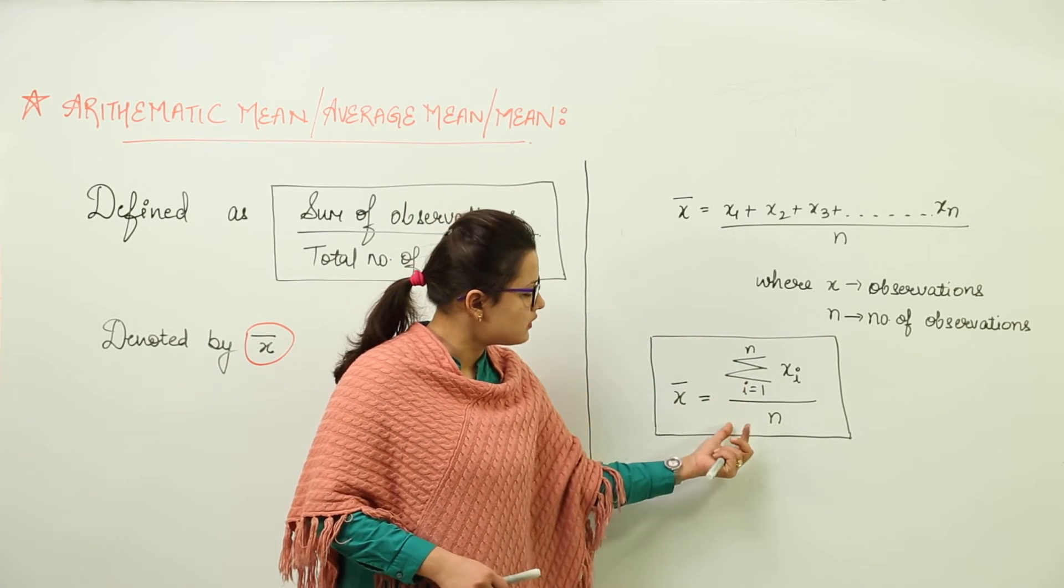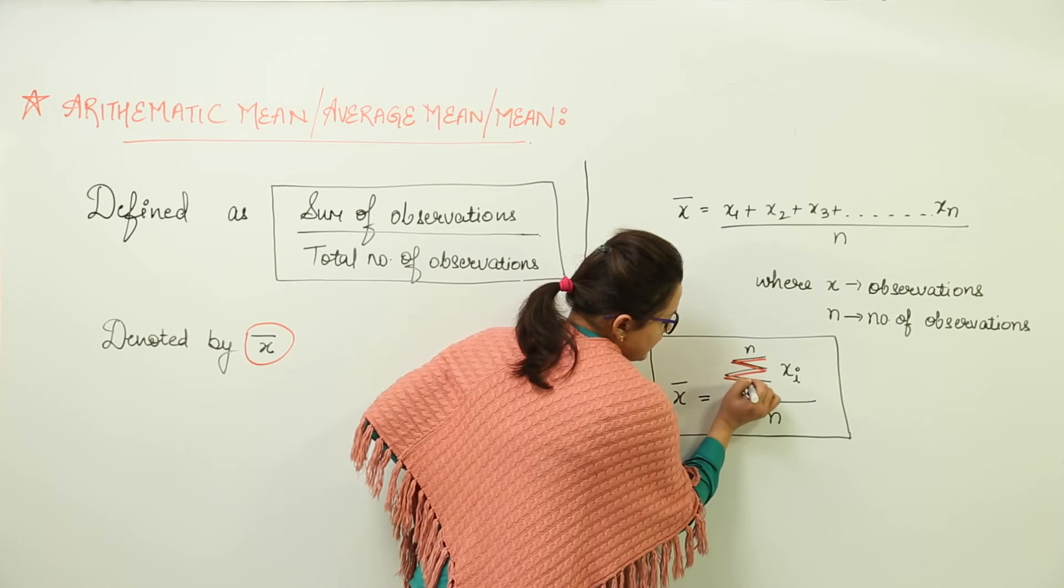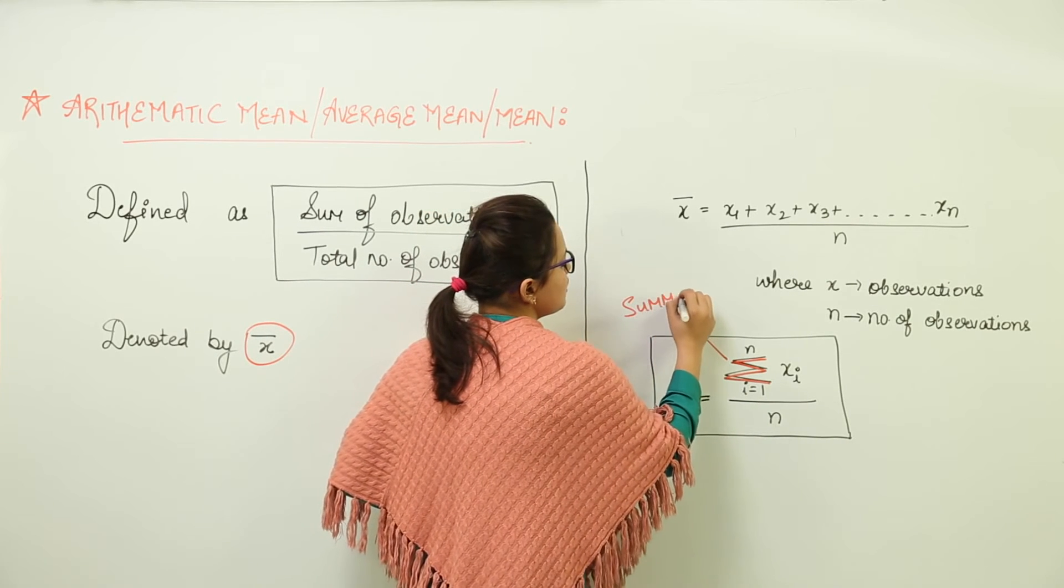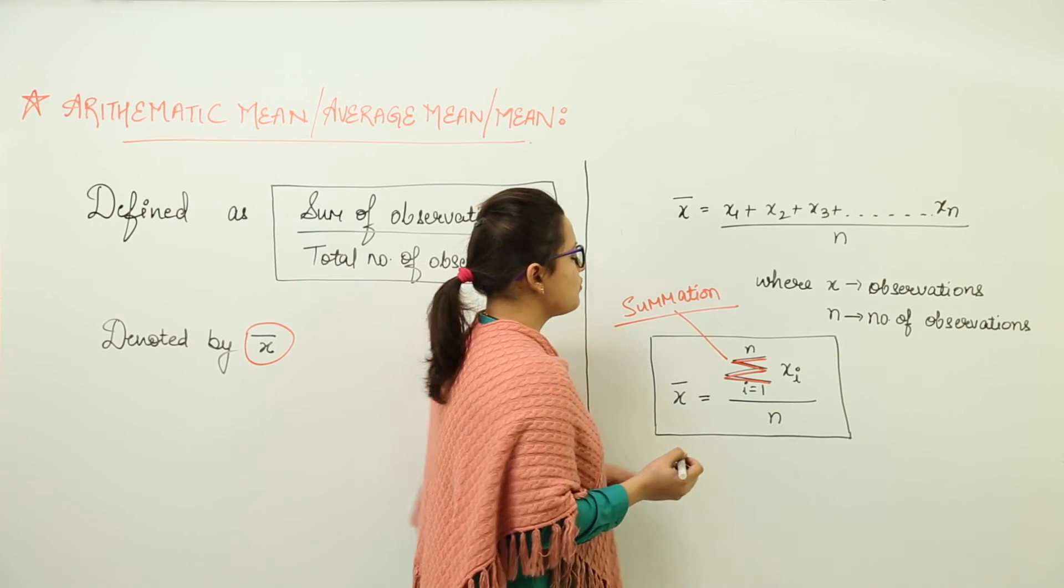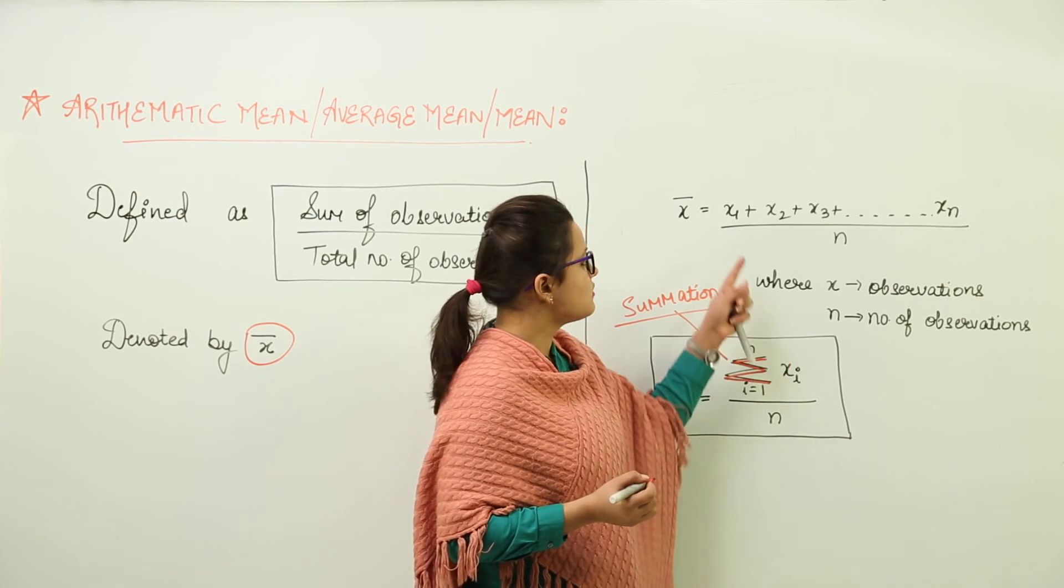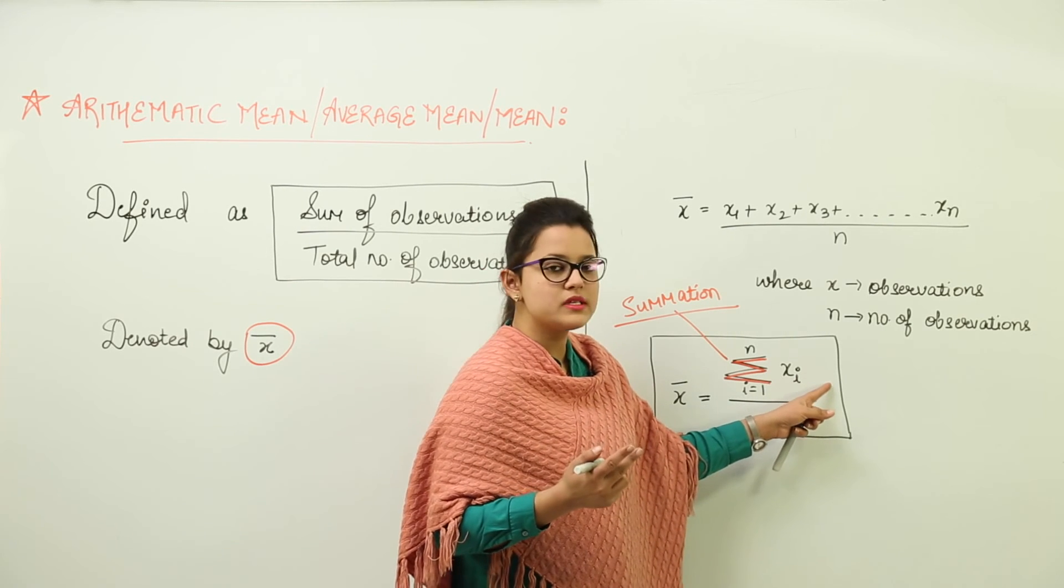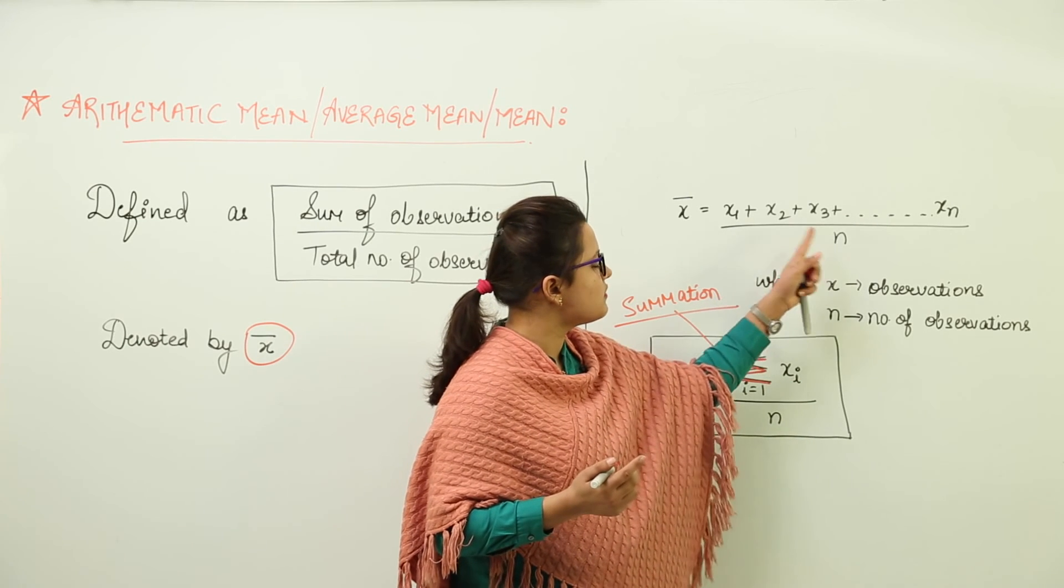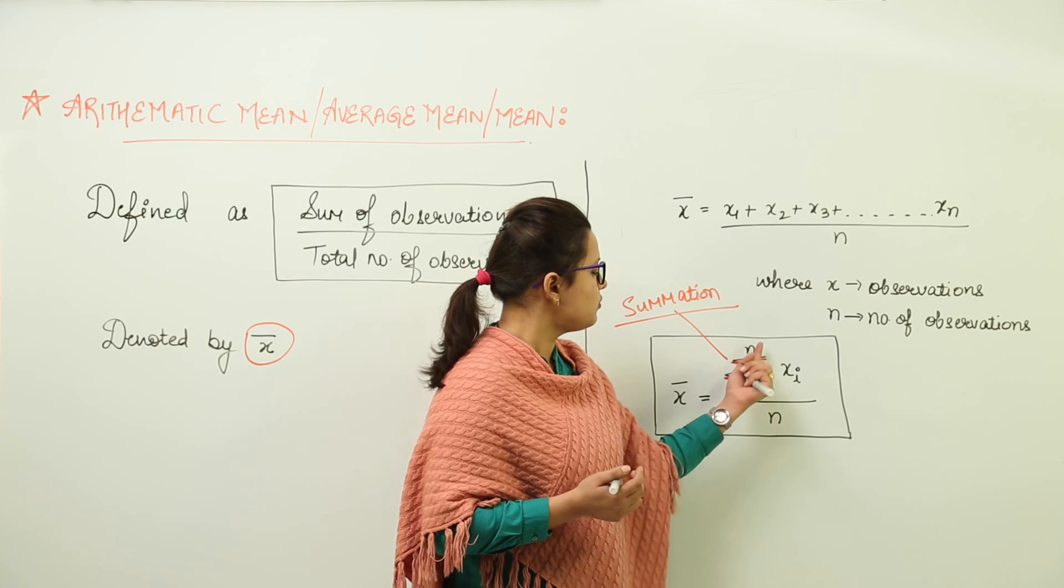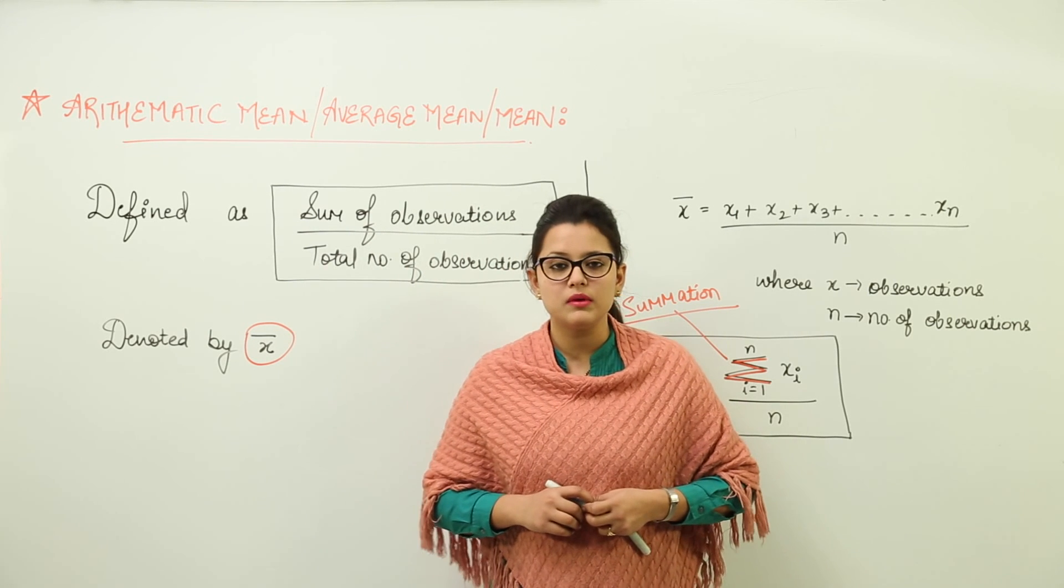Now this is further written down in another form which is this. Now what is this sign showing you? This sign I have highlighted it with the red colour. Now see this sign is known as summation. It is known as summation. Summation means you are doing the sum of XI where I is starting from 1 to N. That means X is starting from 1. That means the first value will be X1 plus up to N. The next value will be 2. So X2 plus X3 plus X4 up to XN. So you are adding all the observations that is written in this form. Summation of XI where I is ranging from 1 to N and this whole is divided with number of observations that is N. So this is how you can calculate the arithmetic mean of any given data.